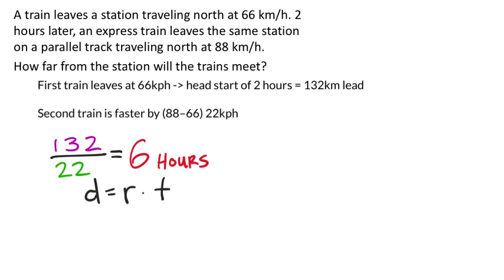And for the second train, we know that its rate was 88 kilometers per hour multiplied by the time, which is six hours, and we get - so the distance should be 528 kilometers.